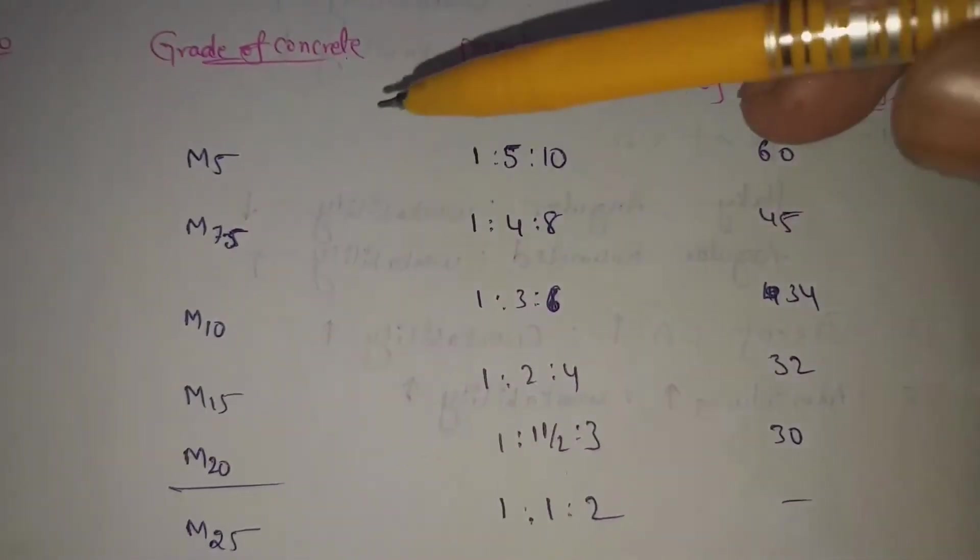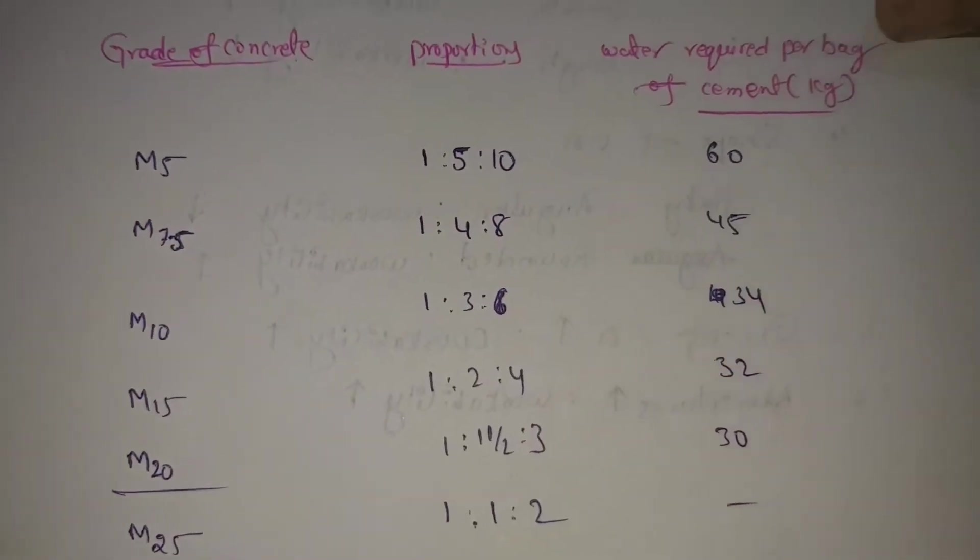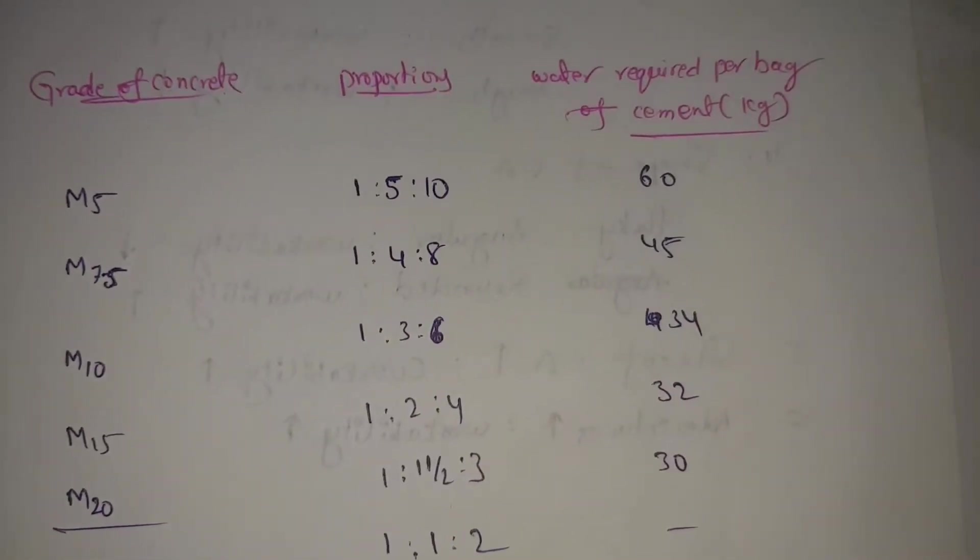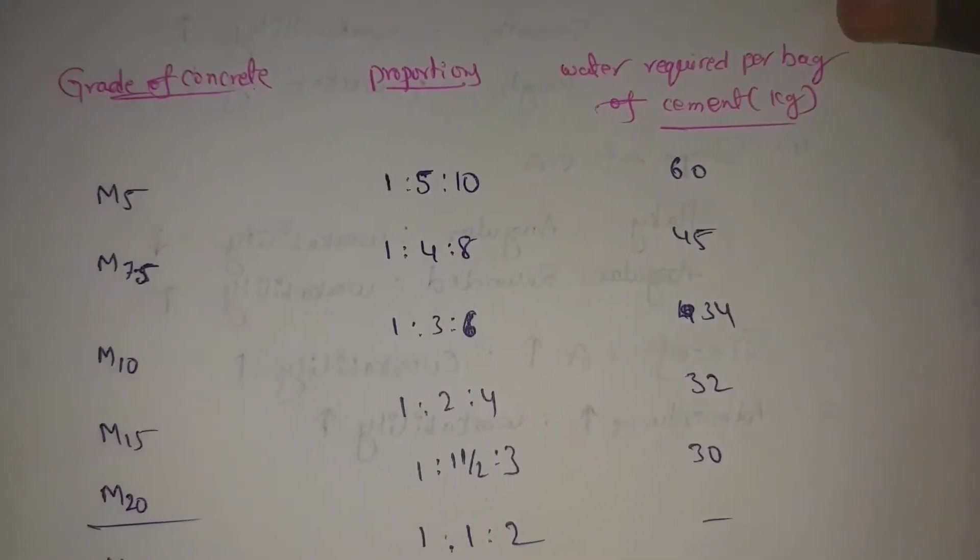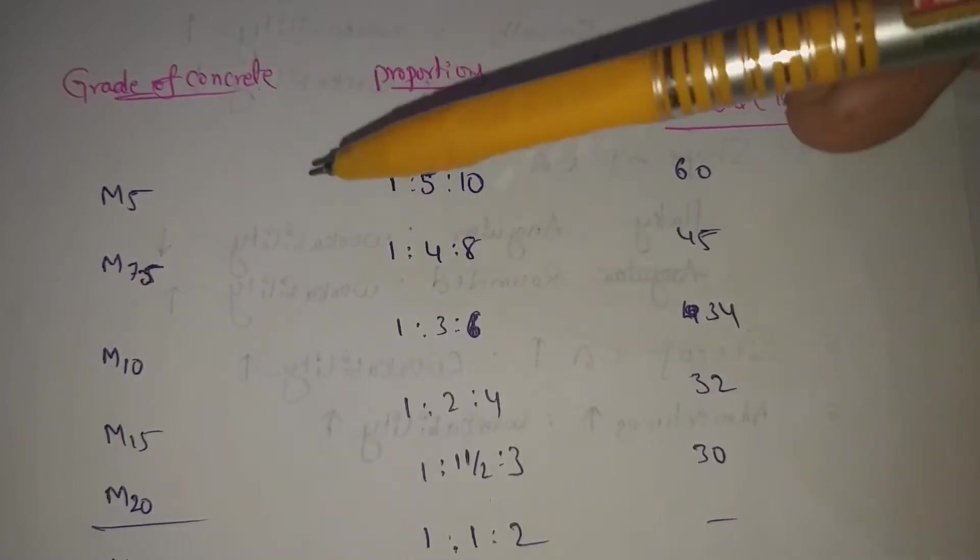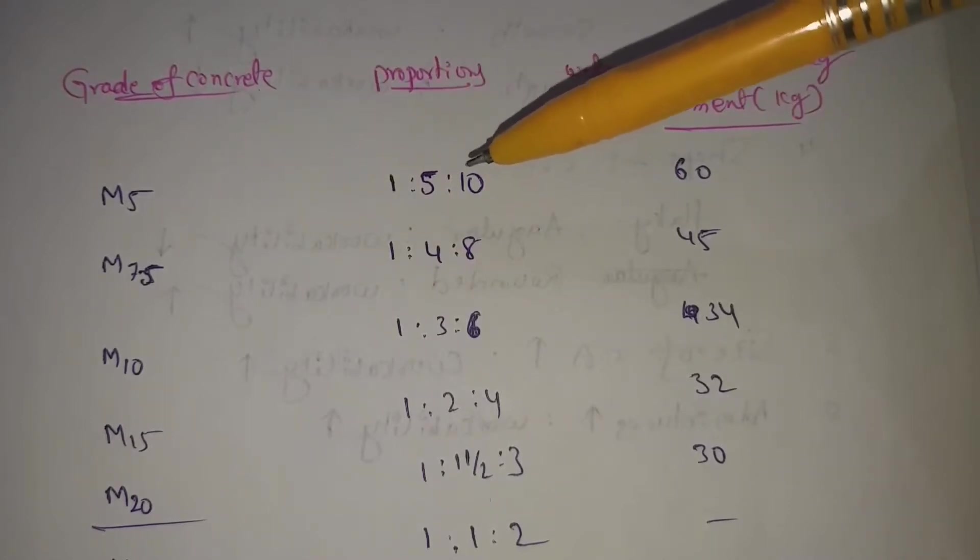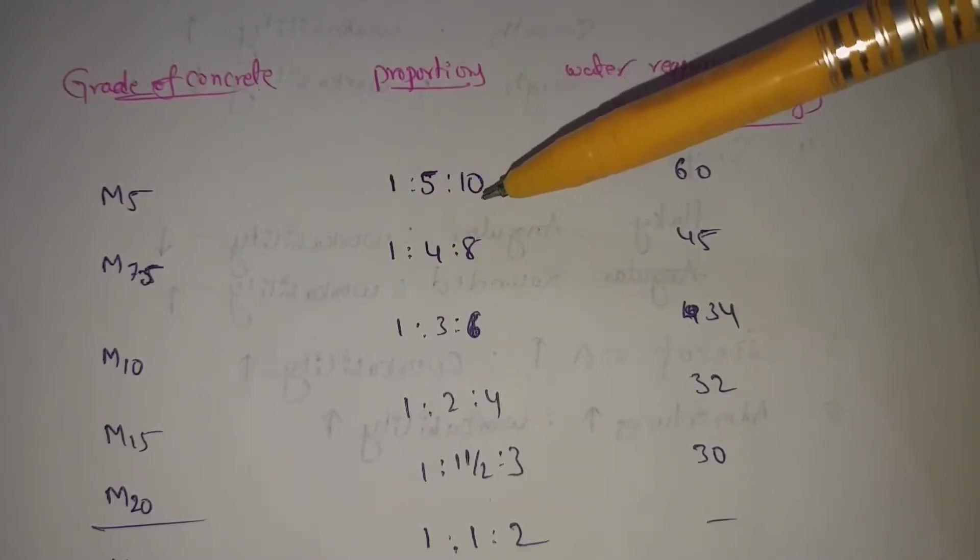If we use different grades, we also use proportions here. Water required for a bag of cement. This is 50 kgs bag. This is the mix proportion. First one is M5. M5 with mix proportions, 1 is to 5 is to 10.